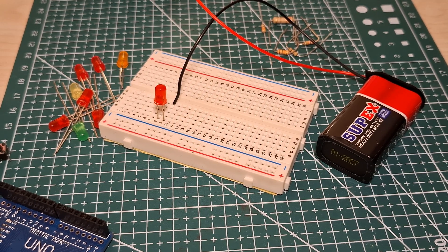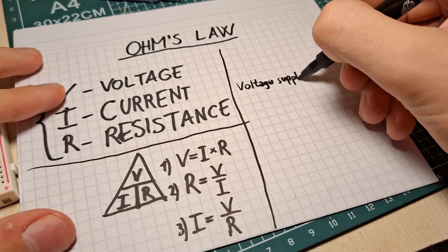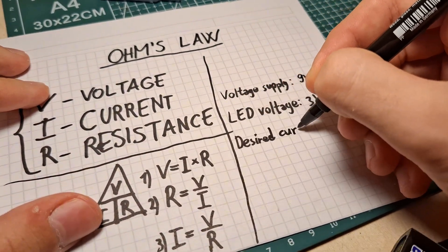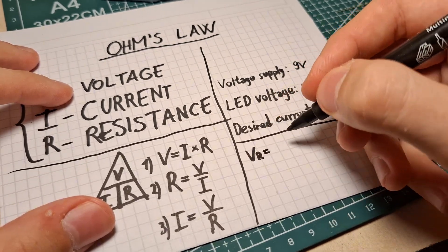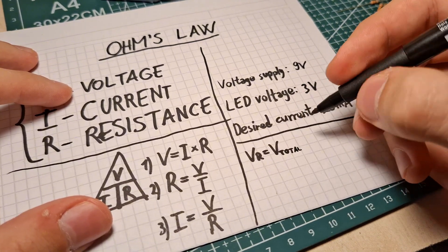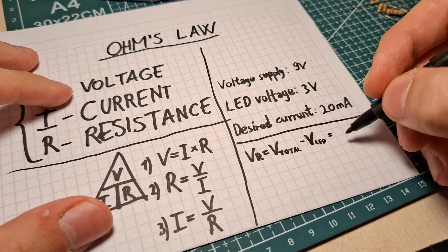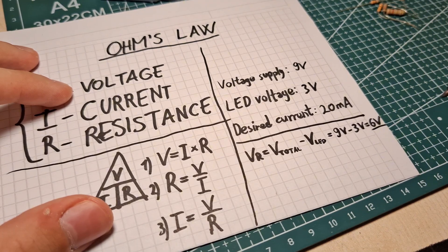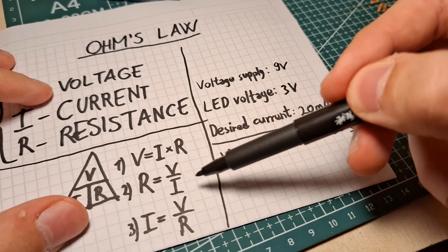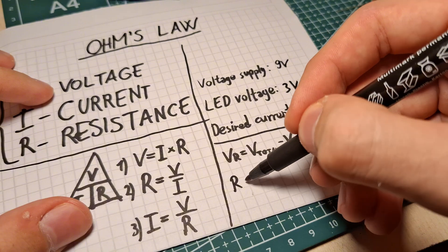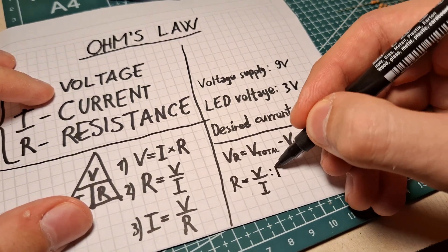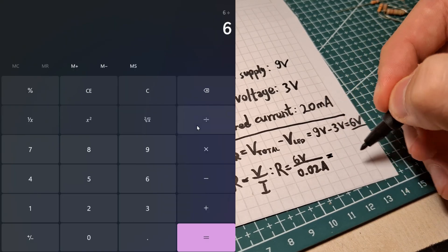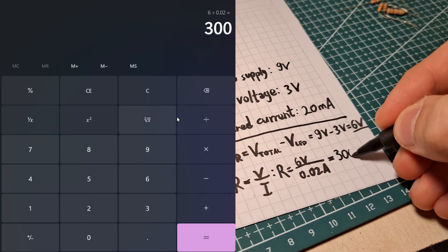Let's calculate the resistor value needed for this LED circuit. First, we find the voltage across the resistor — I subtract the voltage of our LED from the total voltage. Next, we use the formula: resistance equals voltage divided by current. After the calculation, I find out that I need a 300 ohm resistor for this circuit.